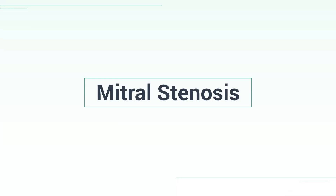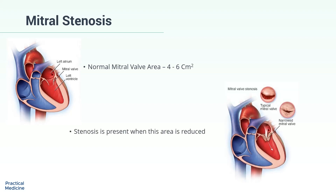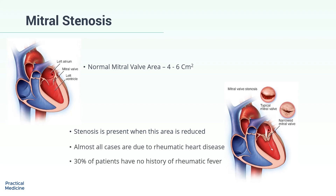Hello dear friends and welcome to this video. In this video, we will have a brief overview of mitral stenosis. The normal area of the mitral valve is 4 to 6 square centimeters. Stenosis is said to be present when this area is reduced. Almost all cases of mitral stenosis are due to rheumatic heart disease, but 30% of patients have no history of rheumatic fever.